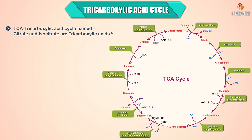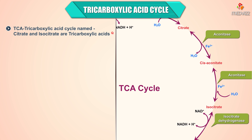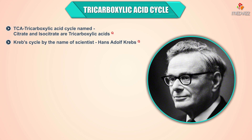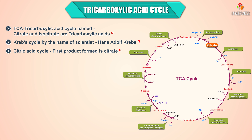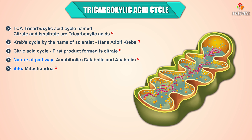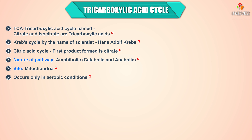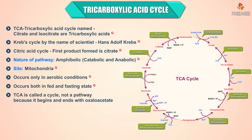TCA cycle, or tricarboxylic acid cycle, is named so because citrate and isocitrate are tricarboxylic acids. It is also called Krebs cycle, after scientist Hans Krebs, and citric acid cycle because the first product formed is citrate. The nature of the pathway is amphibolic, meaning both catabolic and anabolic. The site is mitochondria. It occurs only in aerobic conditions and in both the fed and fasting state. TCA is called a cycle because it begins and ends with oxaloacetate.